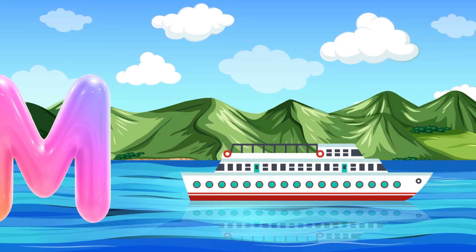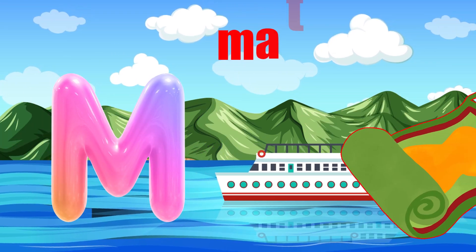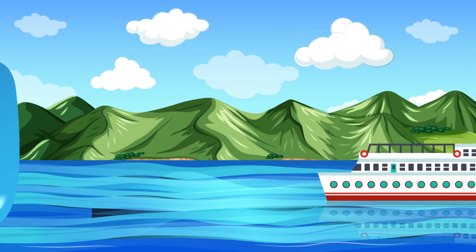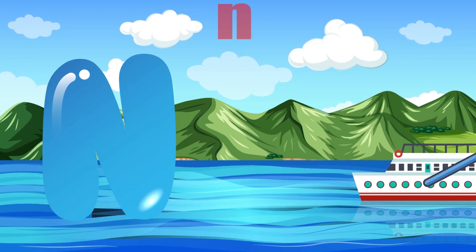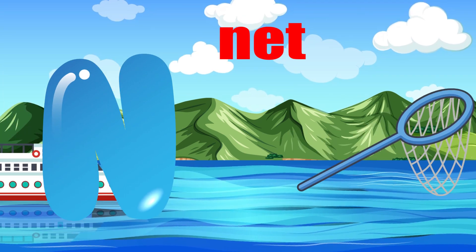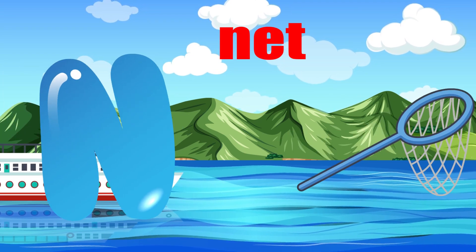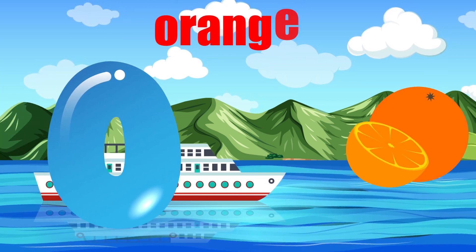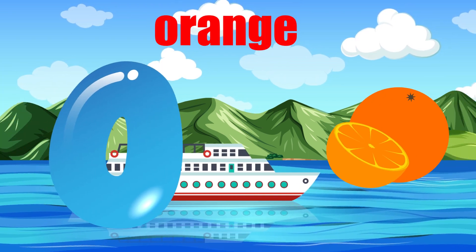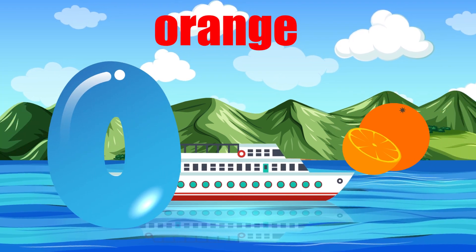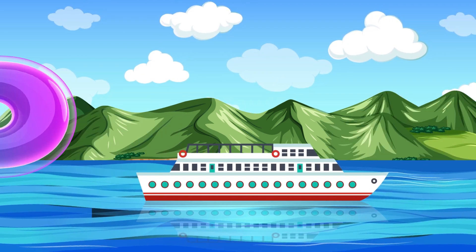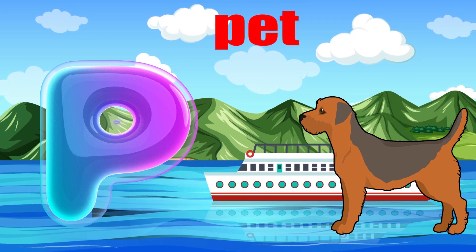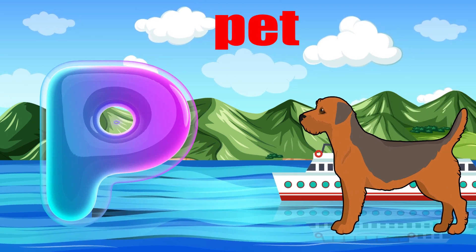M is for mat, m-m-mat. N is for net, n-n-net. O is for orange, o-o-orange. P is for pet, p-p-pet.